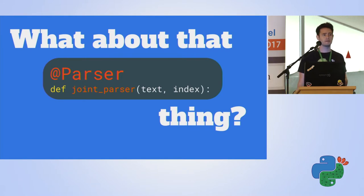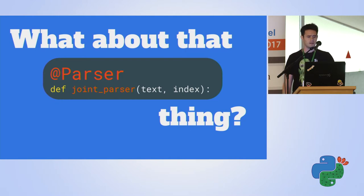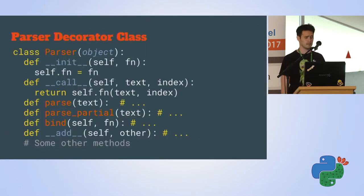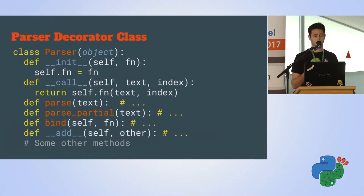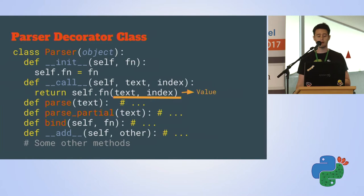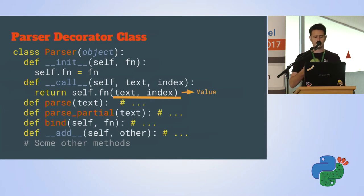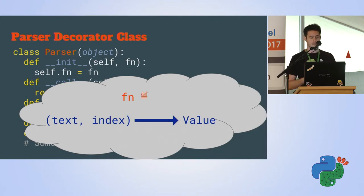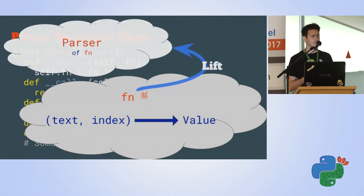Things get interesting when we start diving into ParsecPy and look at the parserDecorator. It's a decorator class that wraps a function and creates a new function - a function from text and index into some value object. Not only does it give us a function, it gives us a function with some added power: all the methods we see and more. In other terms, it takes some function from text and index to value, and lifts it into the parser monad.